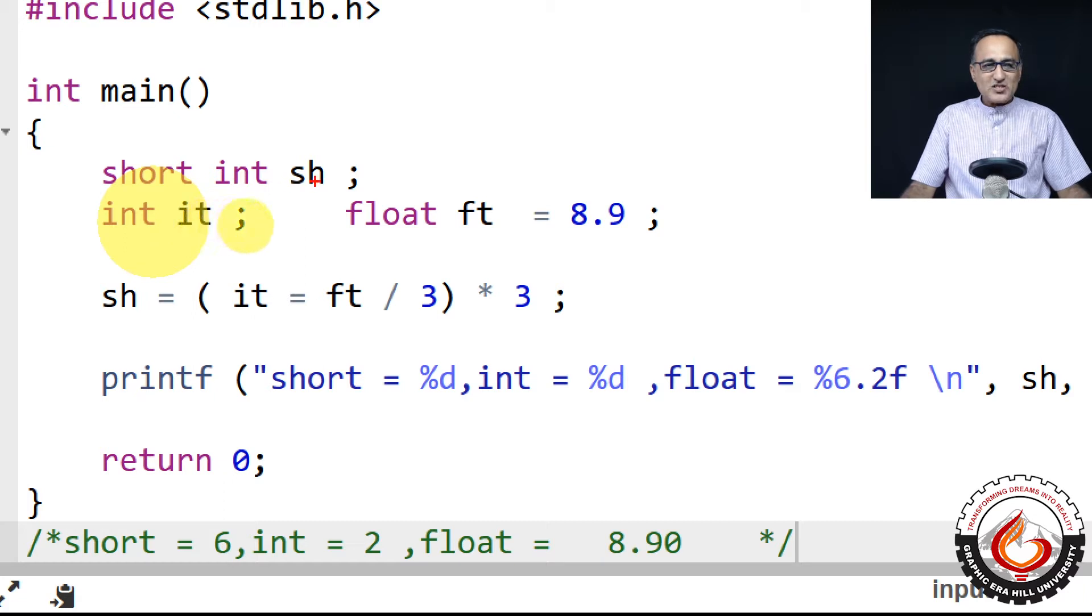So I have short int sh, I have an integer variable it, and I have a float variable ft as 8.9.